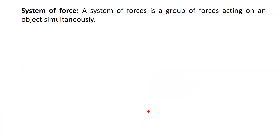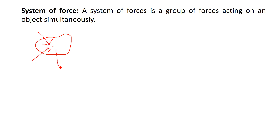System of force means a group of forces acting on a body. When a number of forces act on a body, collectively these forces are called a system of force. For example, if you consider one irregular body and a number of forces are acting on it, all these forces together is called a system of force.